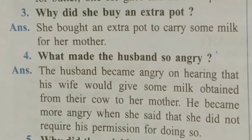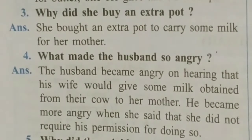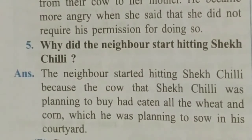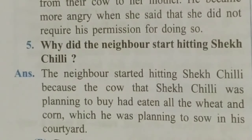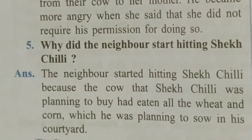He became more angry when she said that she did not require his permission for doing so. (Aur wo isliye aur angry hua kyunki jab uski wife ne kaha ki use uski permission ki koi zaroorat nahi hai.) Question five: Why did the neighbor start hitting Sheik Chilli? Answer: The neighbor started hitting Sheik Chilli because the cow that Sheik Chilli was planning to buy had eaten all the wheat and corn which the neighbor was planning to sow in his courtyard.